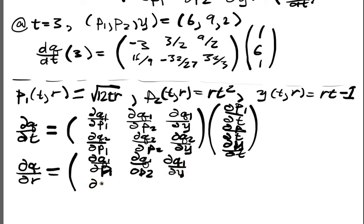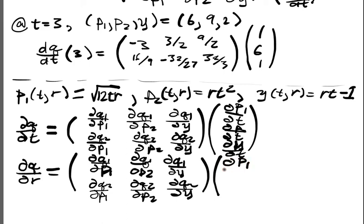So dq has ∂q1/∂p1, ∂q1/∂p2, ∂q1/∂y, ∂q2/∂p1, ∂q2/∂p2, ∂q2/∂y times the change of my economy vector, the rate of change of my economy as I vary the interest rate, (∂p1/∂r, ∂p2/∂r, ∂y/∂r).